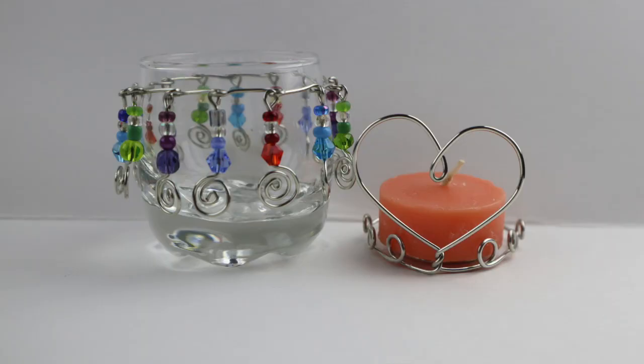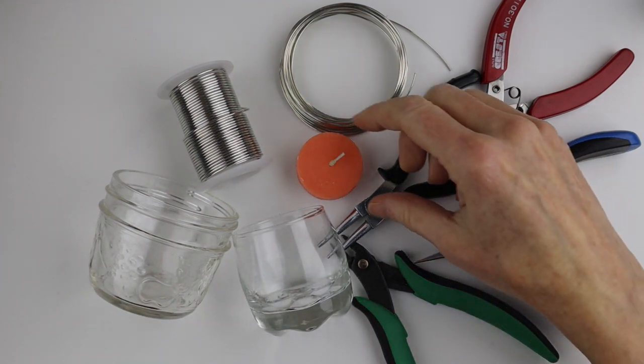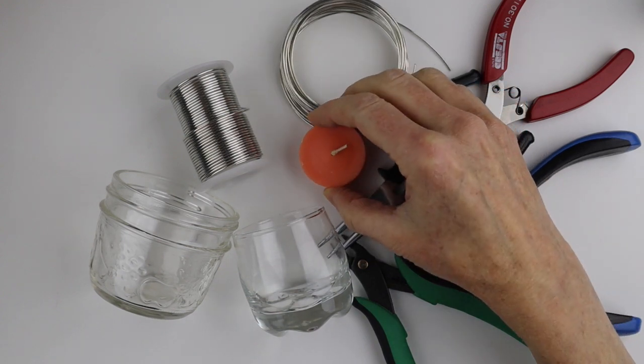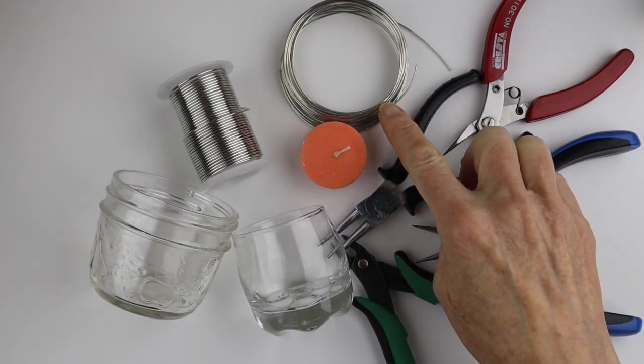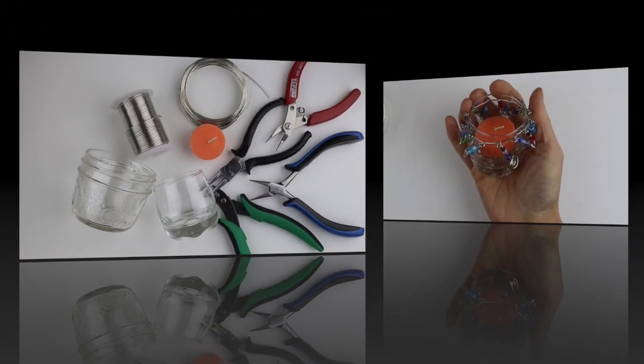Today we're going to make some lovely candle holders and what you're going to need for this project are a mason jar or a little shot glass jar, a little jar that will fit a tea light candle or there's an option just to use the candle. You'll need your tools, 18 gauge wire and some 16 gauge wire or one or the other.